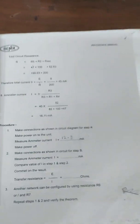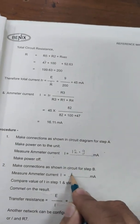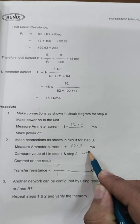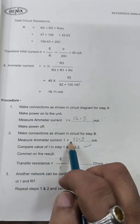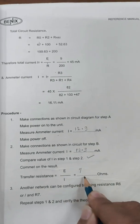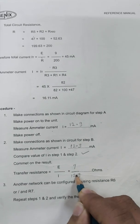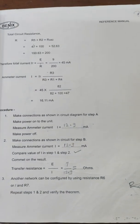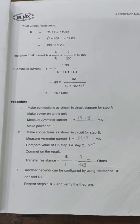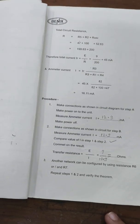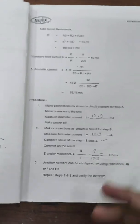For 7 volts we are getting 12.9 milliamperes for this second reading as well. Comparing step one and step two: step one gives 12.9 mA and step two gives 12.9 mA — they are the same, verifying reciprocity. Now comment on the result: transfer resistance = E/I = 7 volts / 12.9 milliamperes = 542.6 ohms.